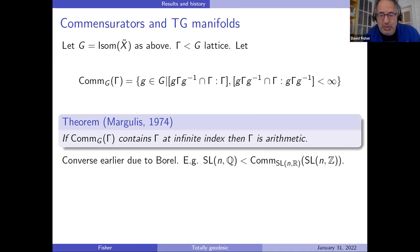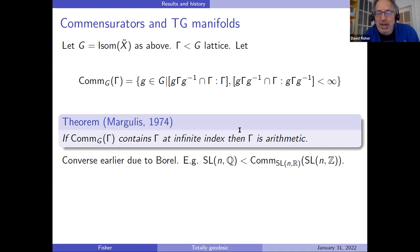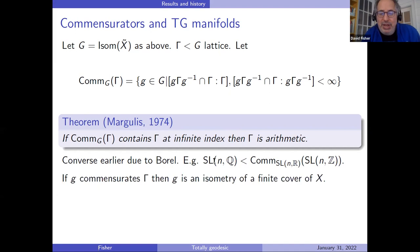The theorem of Margulis says that if this commensurator is really bigger than gamma — not just containing gamma at finite index — then gamma is forced to be arithmetic. The converse is earlier and due to Borel. The example for the converse is: if I look at SL(n,Z) and its commensurator in SL(n,R), what you get are the rational matrices. You can do this as a by-hand matrix computation — if I conjugate integral matrices by some fixed rational matrix, the denominators are bounded and you get this finite intersection condition. It turns out that if the commensurator contains gamma at infinite index, then it is always the rational points — and so it's always dense if your group is arithmetic, and that's equivalent to being arithmetic.